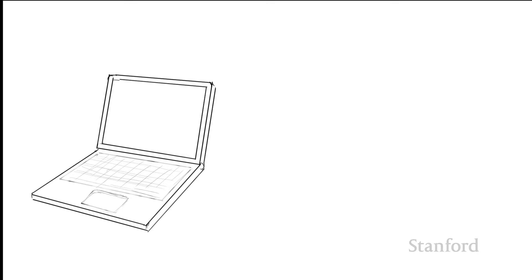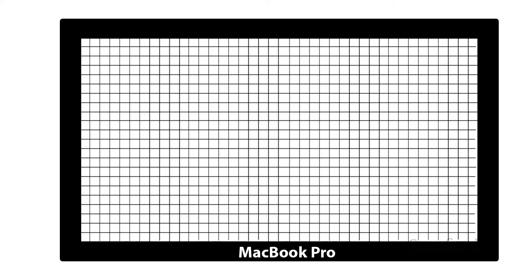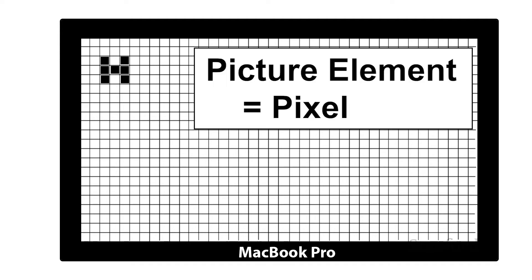Let's start off by taking a look at a typical computer screen. If we take a magnifying glass and look very closely at the screen, what we'll discover is that the screen is actually composed of a gigantic grid. In our black and white case, each of the grid elements can either be on or off, and by turning individual pixels on or off, we can generate a particular image. In this case, I've turned on a number of pixels in the top left-hand corner, and you can see that this is forming the letter H. Each of these individual grid elements is what we refer to as a picture element, or for short, pixel.